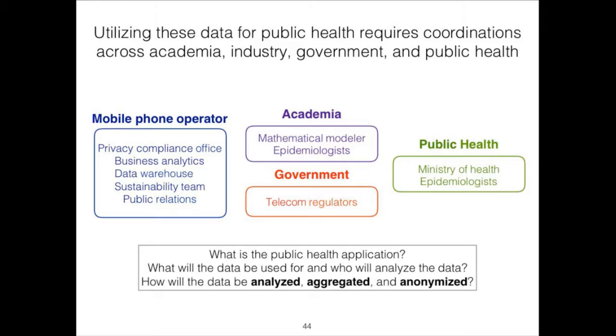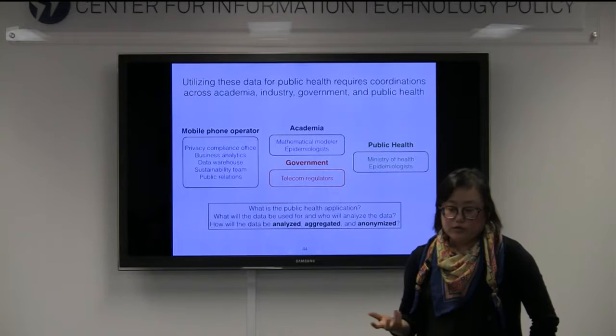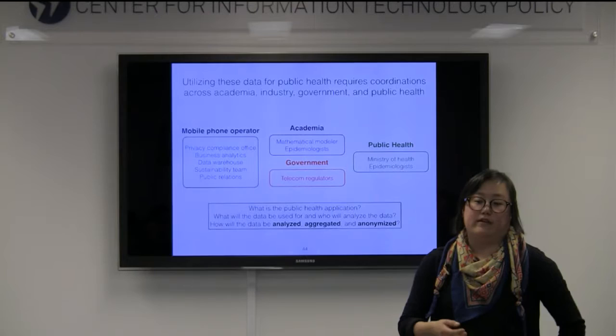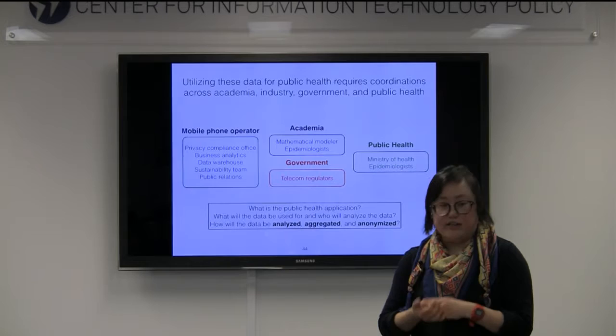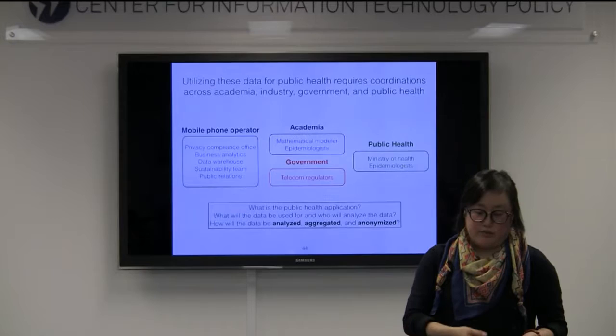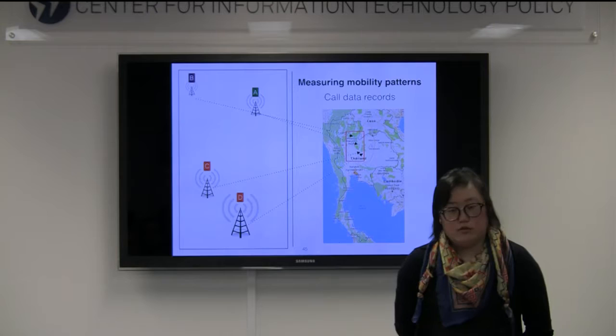All these different groups are really interested in: what is the public health application, what will the data be used for and who's going to analyze it, and exactly how is it going to be aggregated and anonymized. Normally when we start a project, we have to have a very clear, specific question — for example, we want to understand how to optimize measles vaccination in Pakistan. Then we're able to get all these different people on board once they agree on the scale of the data we're going to be analyzing and what it's going to be used for.